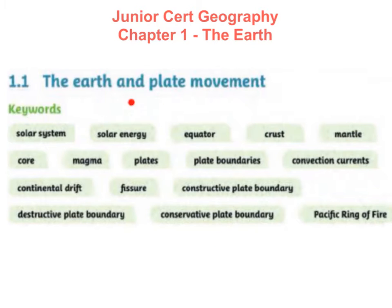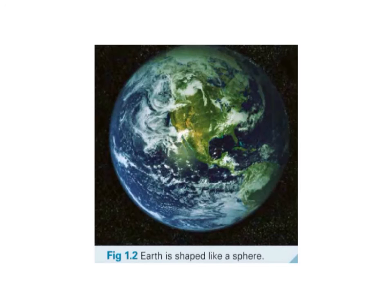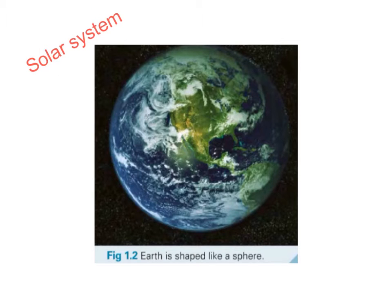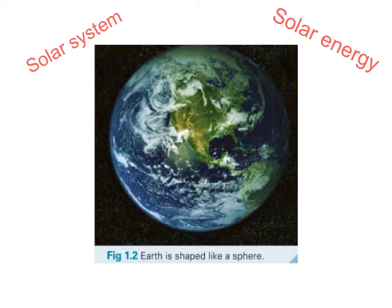You shall be able to explain what all of these mean for the Junior Cert. This is a satellite image of the Earth and it is shaped like a sphere. Planet Earth lies in our solar system, which is made up of eight planets, their moons, and the sun. The planets move around or orbit the sun. The Earth is actually flattened at the south and north poles and bulges at the equator.